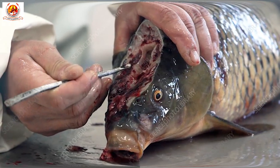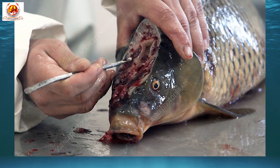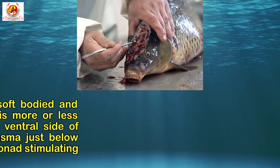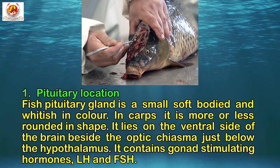First is pituitary location. The fish pituitary gland is a small, soft body, whitish in color. In carps, it is more or less rounded in shape. It lies on the ventral side of the brain beside the optic chiasma, just below the hypothalamus. It contains gonad-stimulating hormones, that is, luteinizing hormone and follicle stimulating hormone.